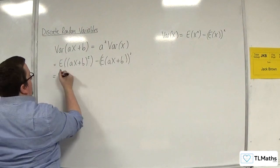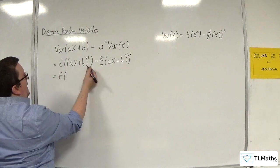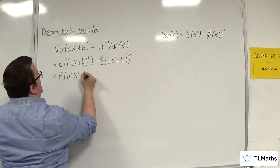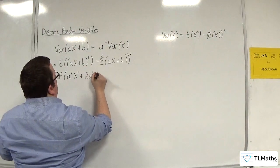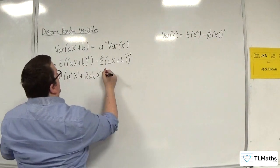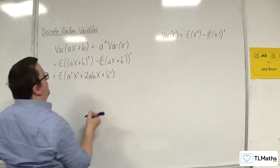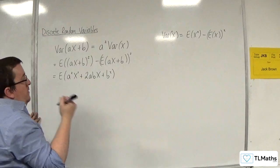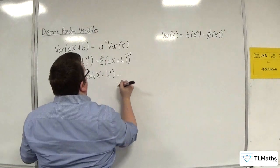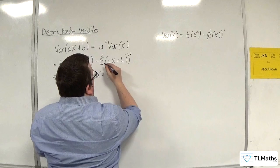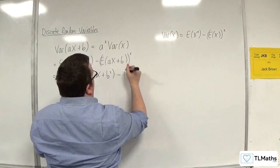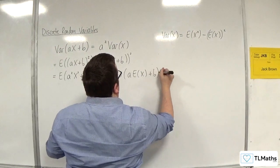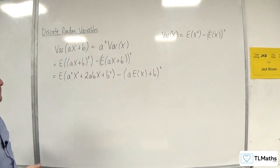So this is e of... Now expanding that bracket out I would have a squared x squared plus 2abx plus b squared. Then take away.